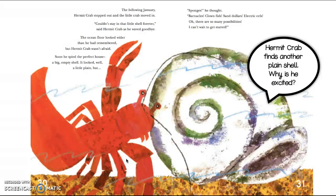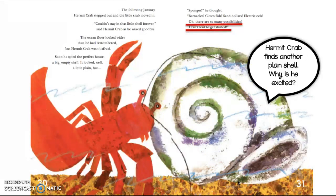Hermit Crab finds another plain shell. Why is he so excited? He thought there are so many different possibilities. He even listed off some ideas he has for decorating this new shell — that's why he's so excited. He even says 'I can't wait to get started,' which tells me as the reader that it's going to be so exciting. Because if I was going to do something I didn't want to do, would I say 'I can't wait to get started?' And looking at the illustrations, I see this nice, big shell that's totally plain. From the other illustrations I know that Hermit Crab did a beautiful job decorating and taking care of it — so with a bigger shell, he has a lot more possibilities. How exciting.